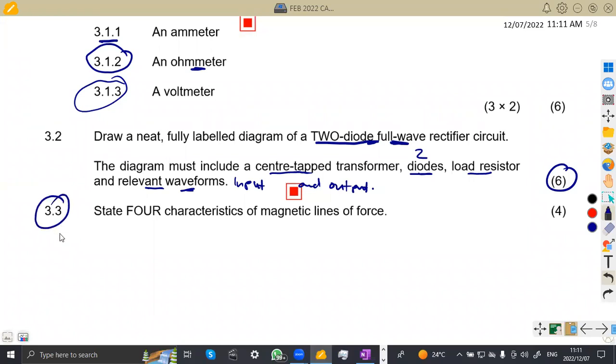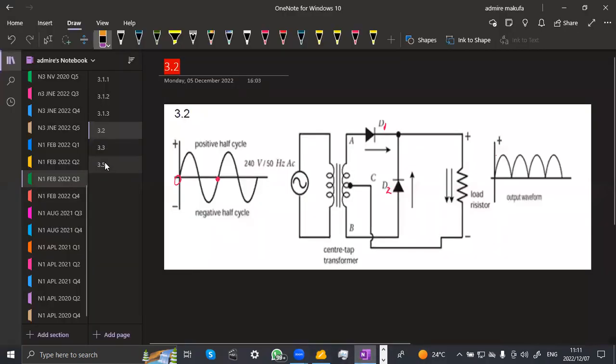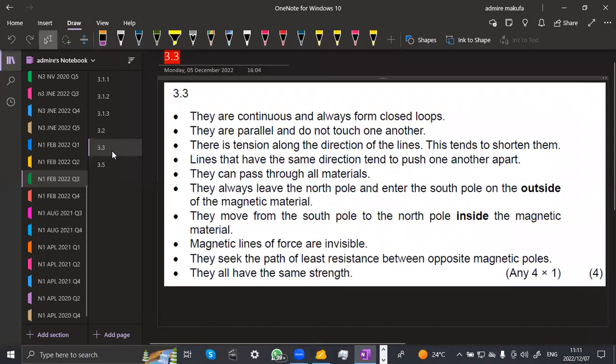We are now given 3.3, state four characteristics of magnetic lines of force. What are the characteristics of magnetic lines of force? That is actually four marks for that. If you have to cross-check here, we have got our list. They are continuous and always form closed loops. They are parallel and do not touch one another. There is a tension along the direction of the lines. This tends to shorten them.